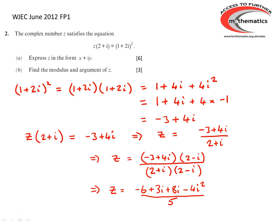Multiplying the numerator out, we get minus 6 plus 3i plus 8i minus 4i squared. Remembering that i squared is minus 1 and simplifying, we end up with z equals (minus 2 plus 11i) divided by 5, or minus two-fifths plus eleven-fifths i.